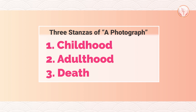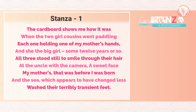In the first stanza, the poet's mother's childhood is shown. Starting with the first stanza, which reads: 'The cardboard shows me how it was when the two girl cousins went paddling, each one holding one of my mother's hand, and she, the big girl, some twelve years or so, all three stood still to smile through their hair at the uncle with the camera. A sweet face, my mother's — that was before I was born. And the sea, which appears to have changed less, washed their terribly transient feet.'